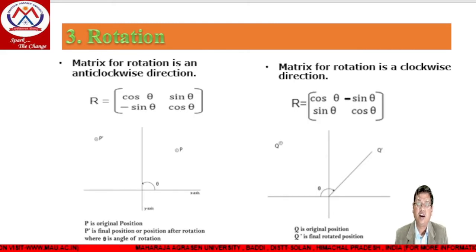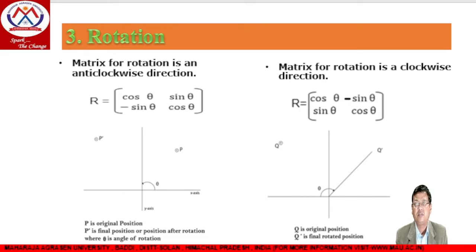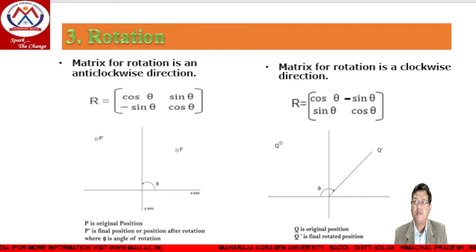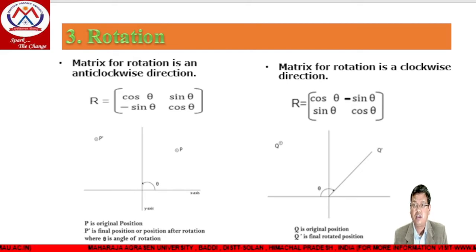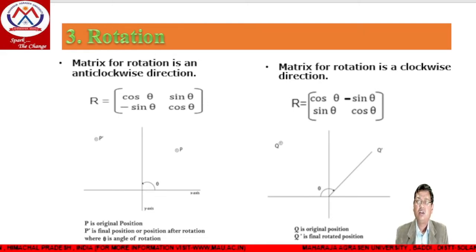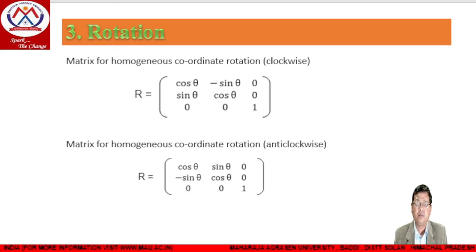The rotation matrix in anti-clockwise direction is: cosθ, -sinθ in the first row and sinθ, cosθ in the second row. In clockwise direction the rotation matrix is: cosθ, sinθ in the first row and -sinθ, cosθ in the second row. We move point P to P' for anti-clockwise, and point Q to Q' for clockwise rotation, where Q is the original position and Q' is the final rotated position.